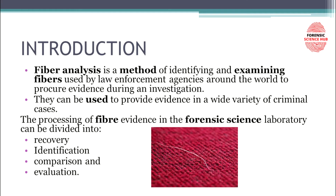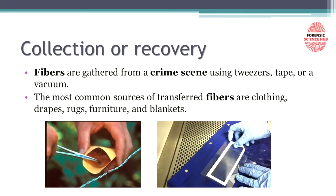First is recovery. When we search for different evidence at the crime scene, we find fiber — that is the recovery portion. After recovery, we collect it. Fibers are gathered from a crime scene using different instruments, like for example tweezers — as shown in the first picture — then tape, as shown in the second picture, or a vacuum cleaner can be used to collect all the fiber and later they can be separated out.